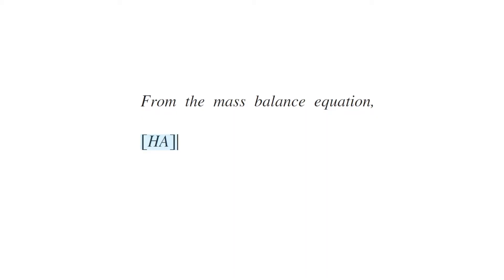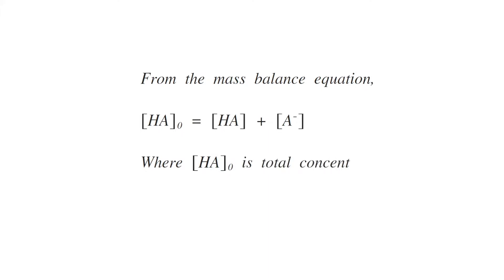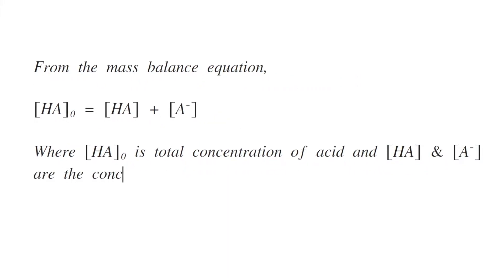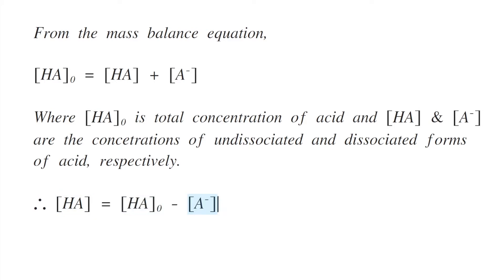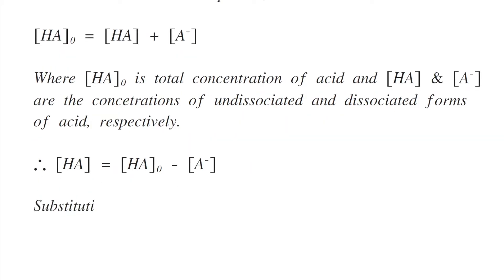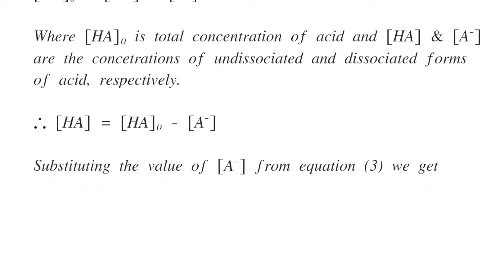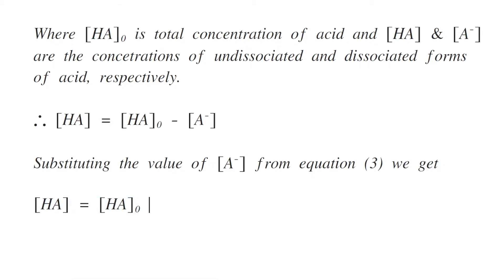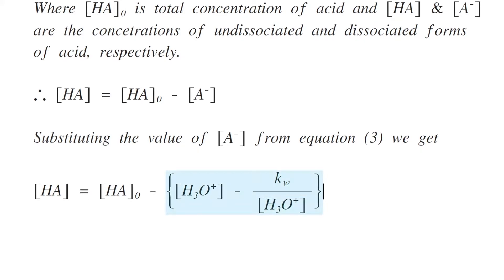From the mass balance equation, the total concentration of acid must equal the sum of undissociated and dissociated forms: C₀ = [HA] + [A⁻], where C₀ is the total acid concentration. So [HA] = C₀ − [A⁻]. Substituting [A⁻] from equation three, we get [HA] = C₀ − [H₃O⁺] + Kw/[H₃O⁺]. This is equation number four.